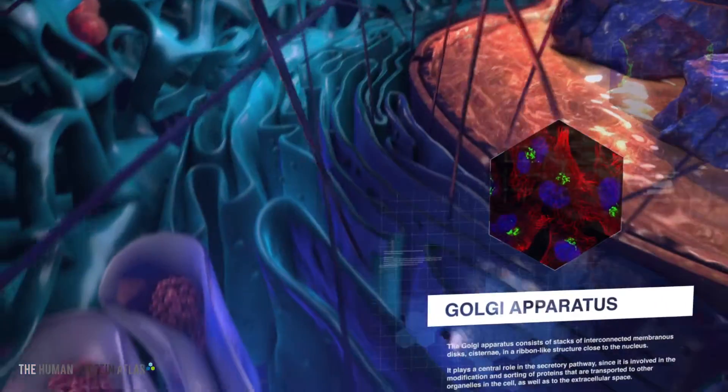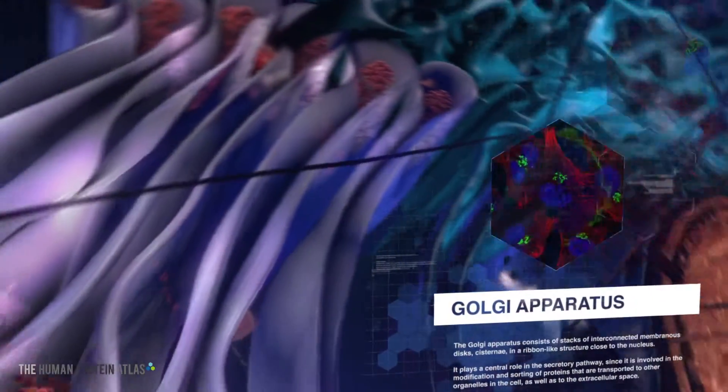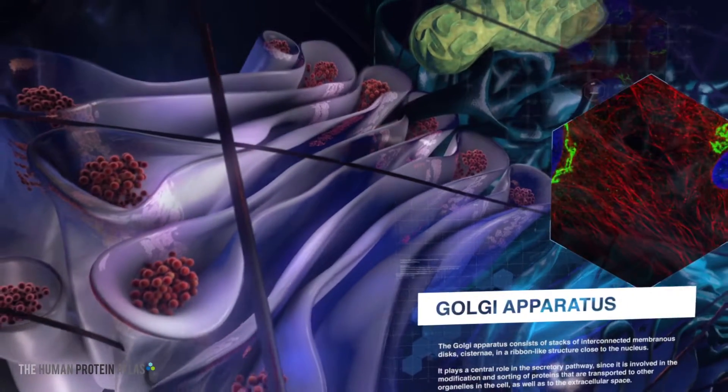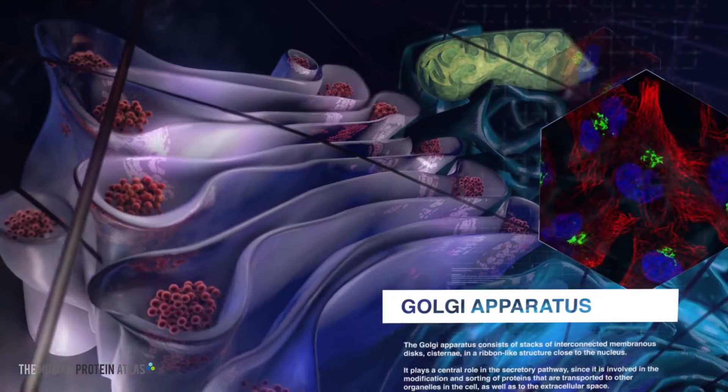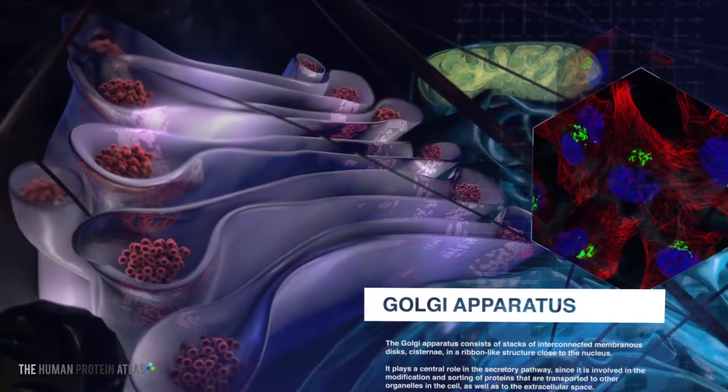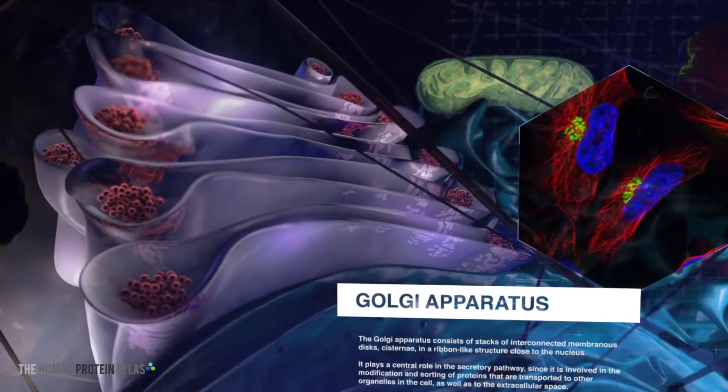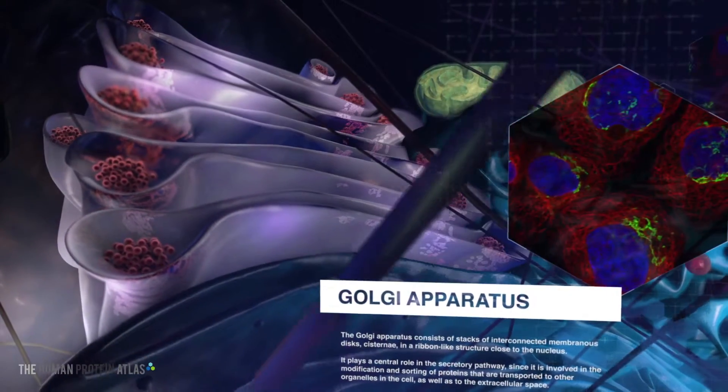The Golgi apparatus consists of stacks of interconnected discs called cisternae. This organelle plays a central role in the secretory pathway, as it modifies and sorts proteins that are transported to other organelles in the cell, as well as to the extracellular space.